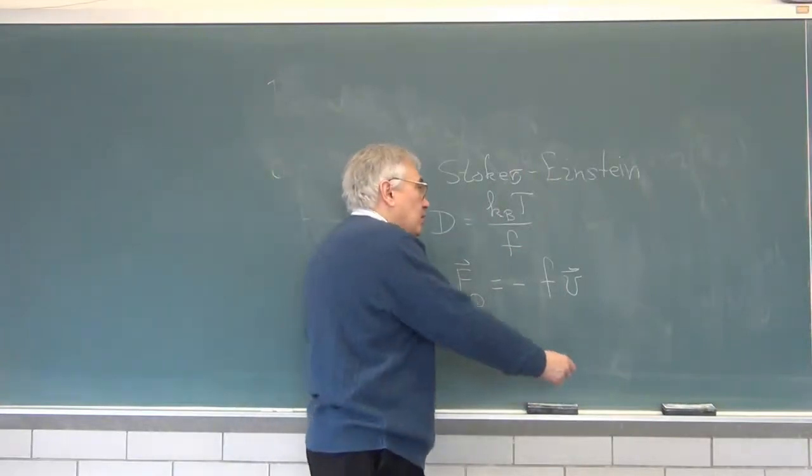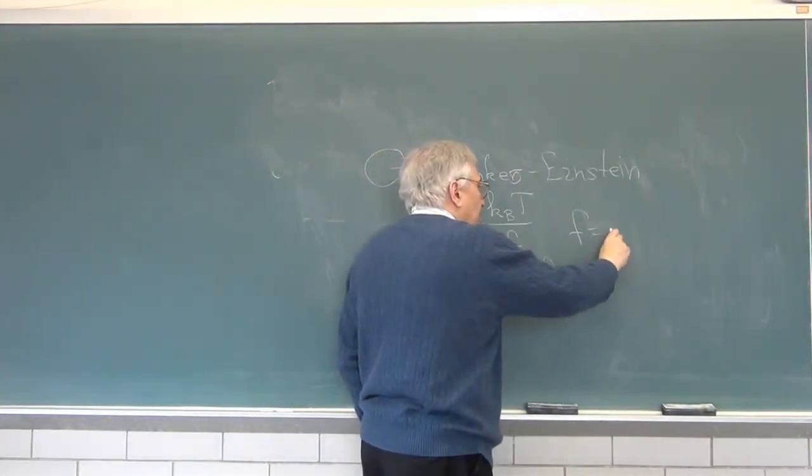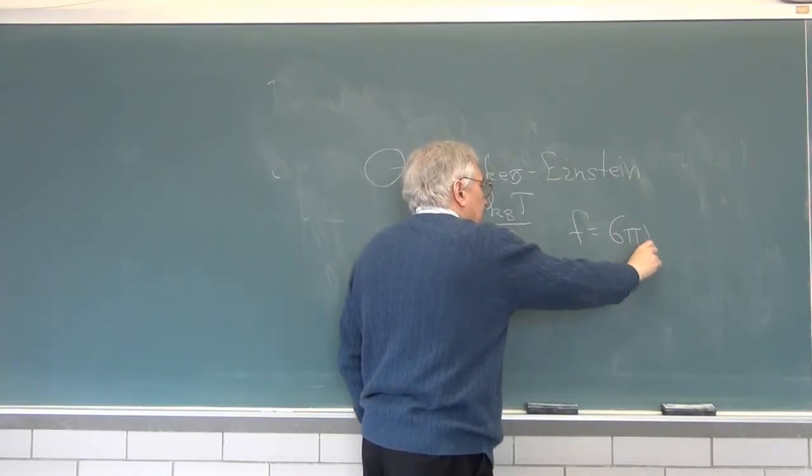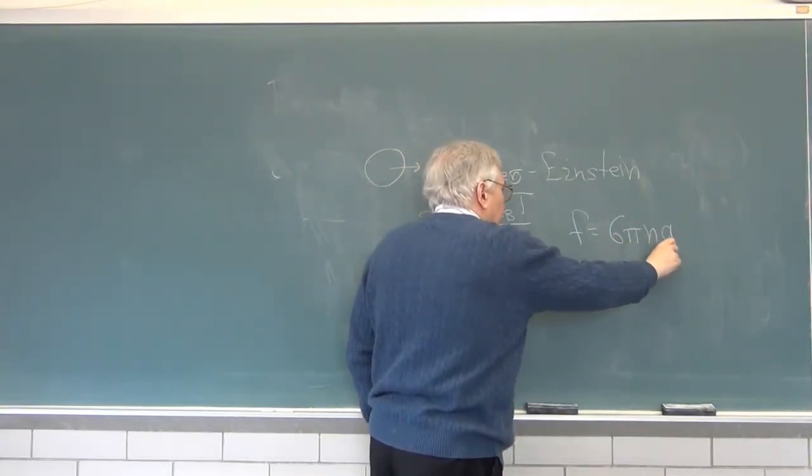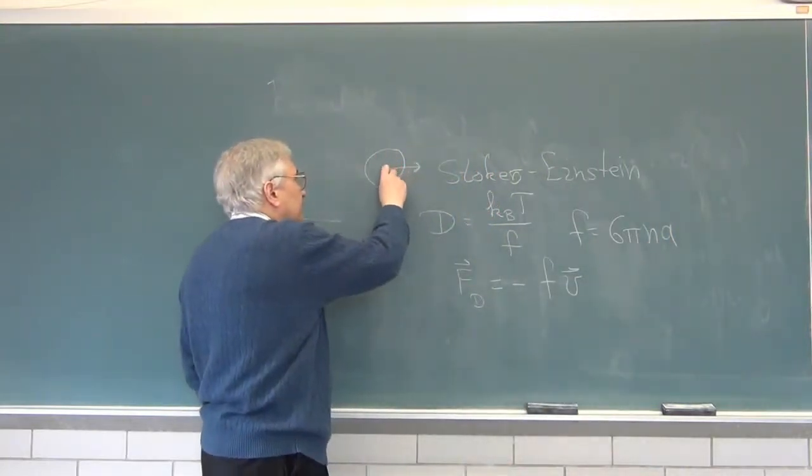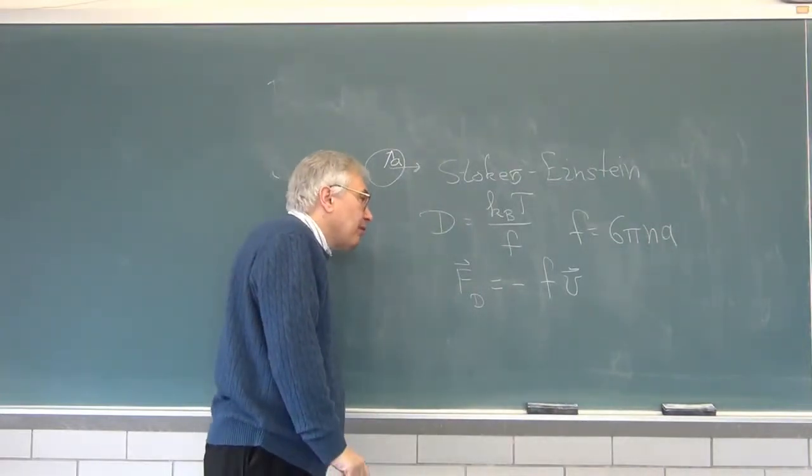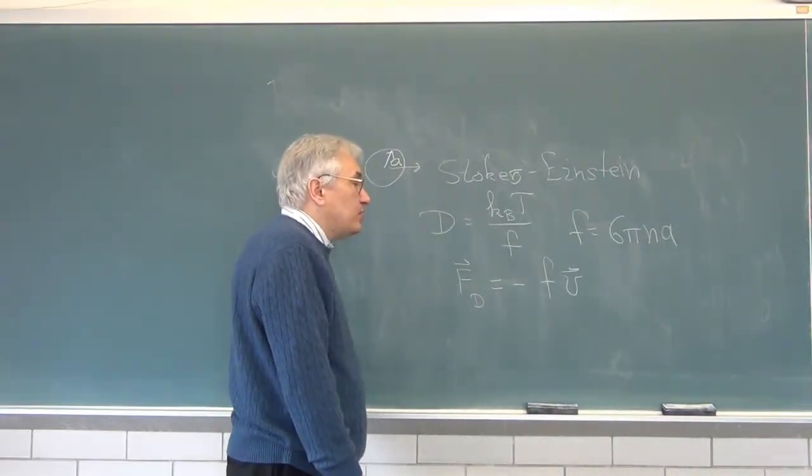For spheres in water, Stokes' law, this is where Stokes comes in, F is 6 pi eta. Eta is the solvent viscosity. A is the radius of the sphere. There's the Stokes-Einstein equation.